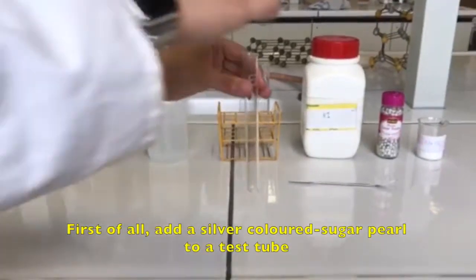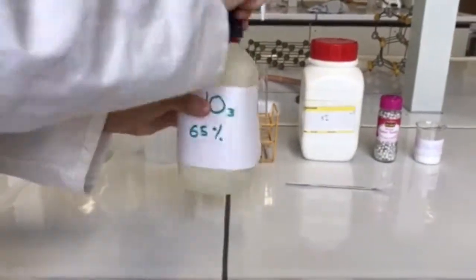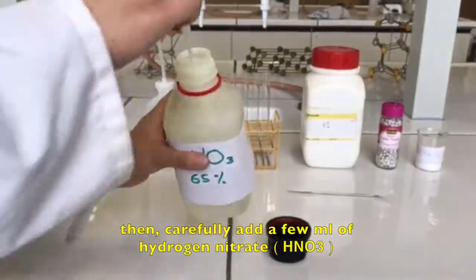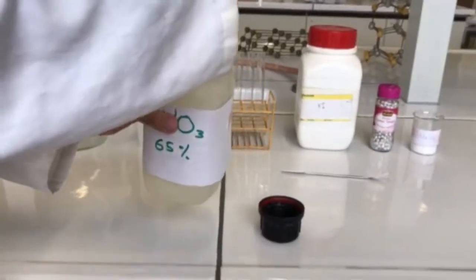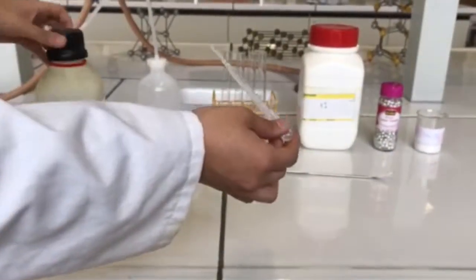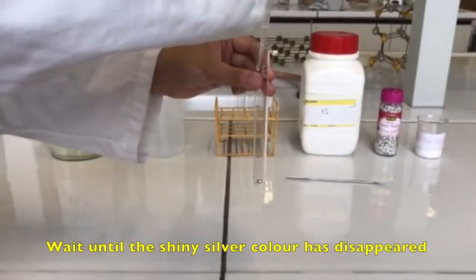First of all, add a silver colored sugar pearl to a test tube. Then, carefully add a few milliliters of hydrogen nitrate. Wait until the shiny silver color has disappeared.